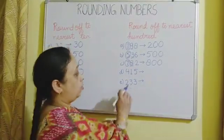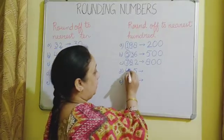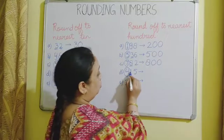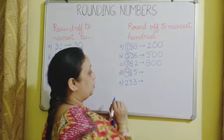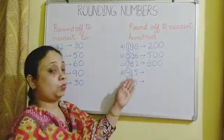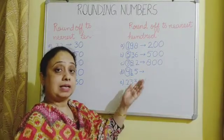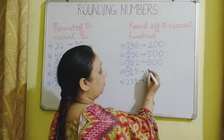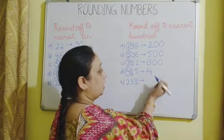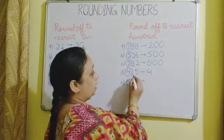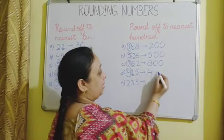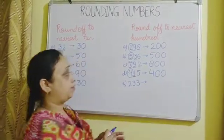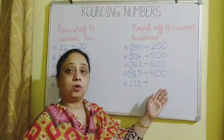Then we have 415. Find the number to round off, then look to the right — that is the 10's place. We have the digit 1, and this 1 is less than 5. So 4 will remain unchanged — we write 4 as it is. And in place of 1 and 5, we place two zeros. Therefore, 415 is rounded off to 400.